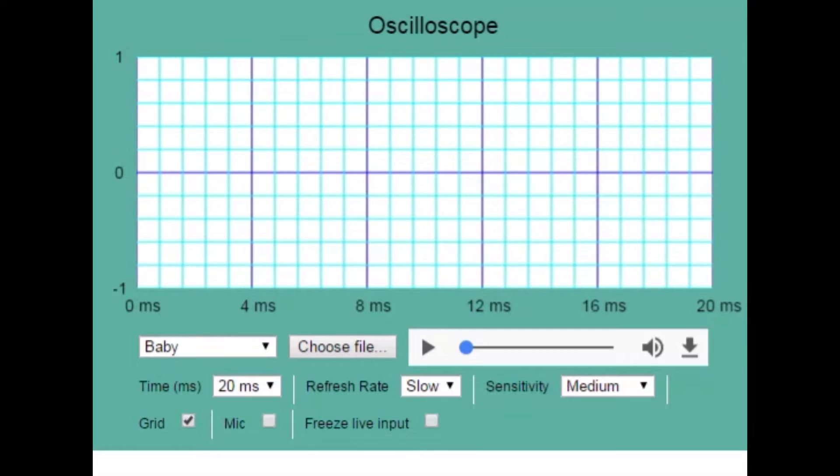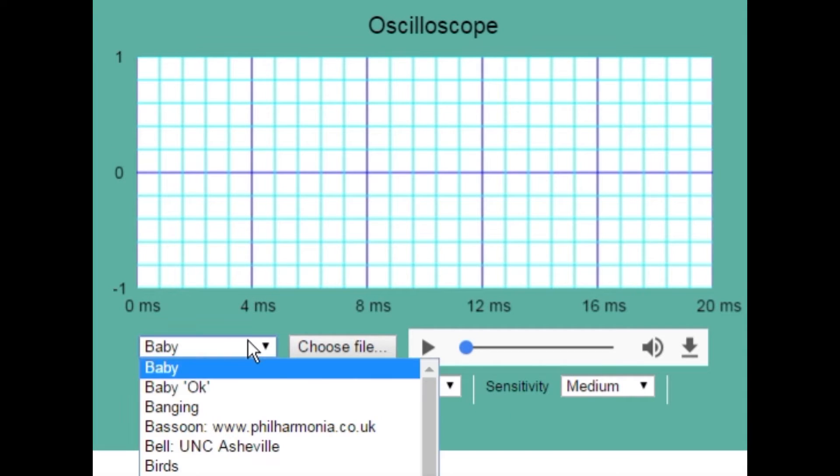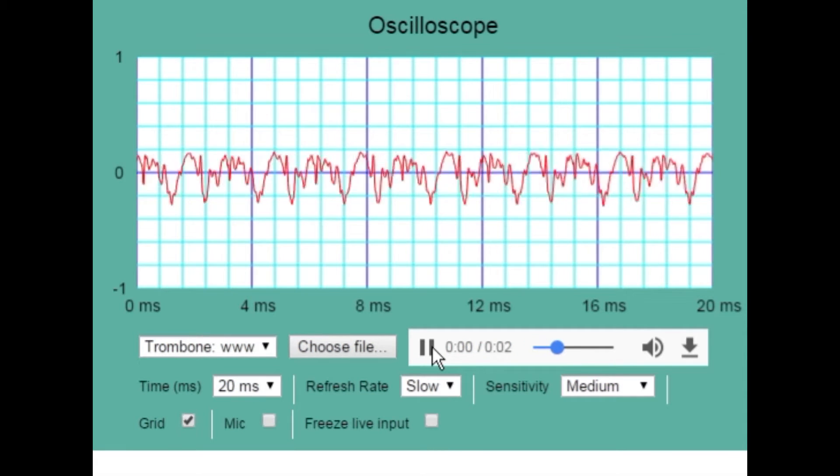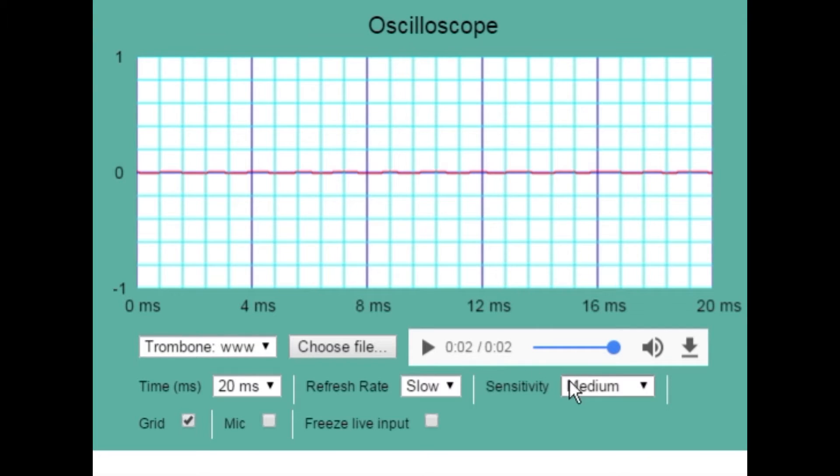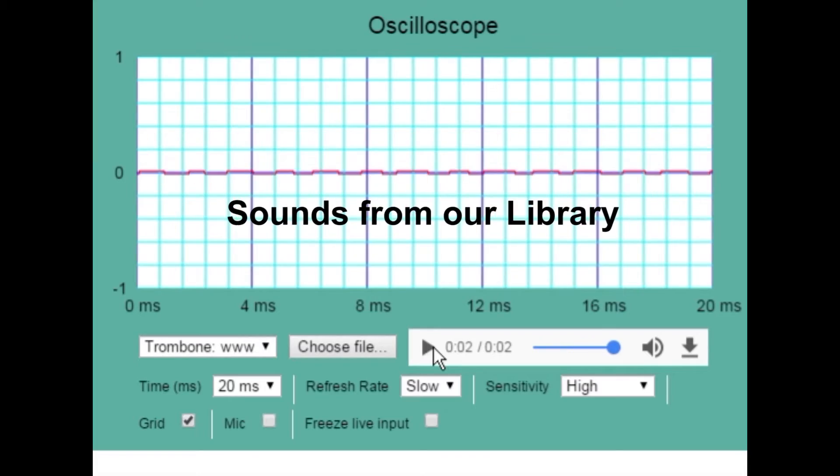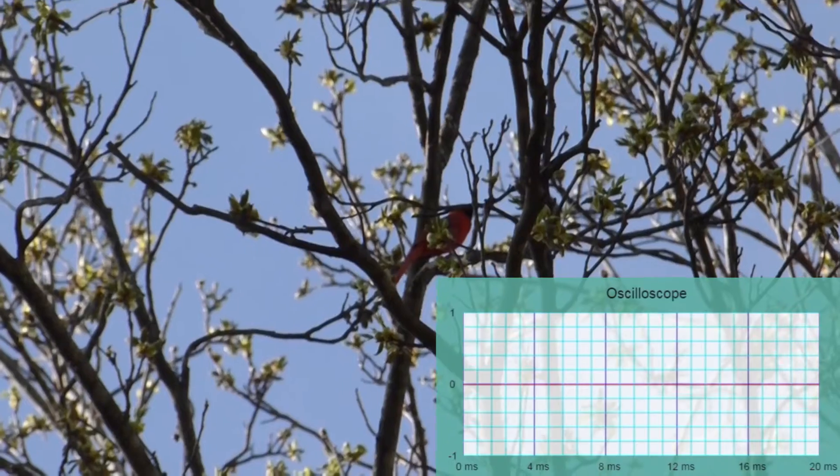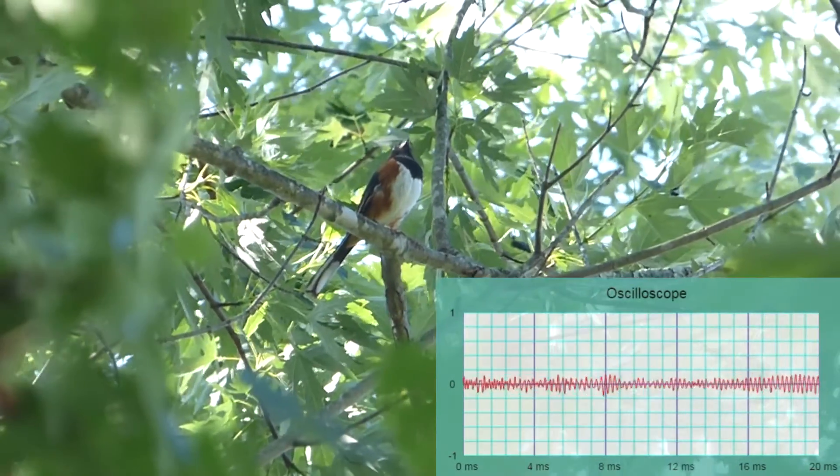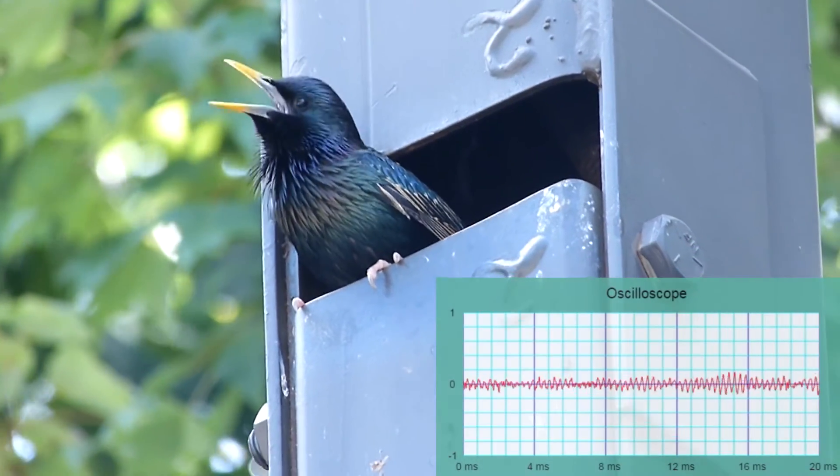You can use our library of sounds in addition to seeing waveforms through your computer microphone or opening audio files. Here is a trombone sound. You can adjust the sensitivity so that the amplitude appears larger.